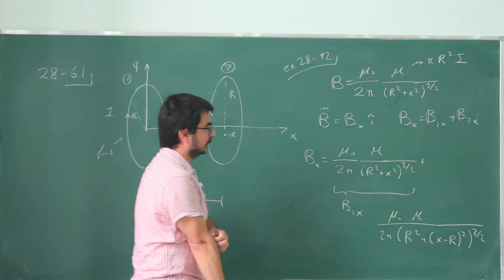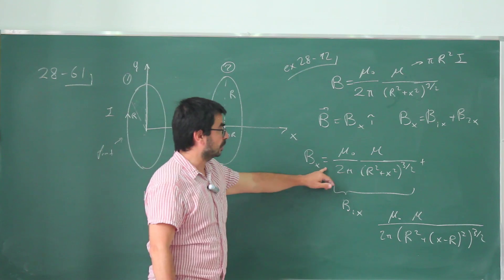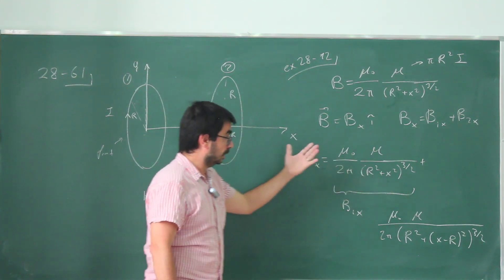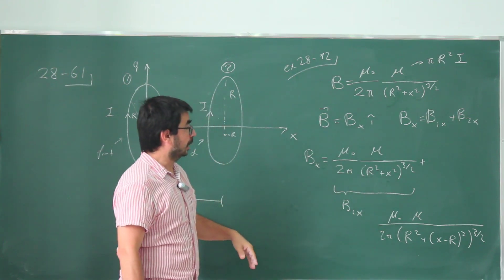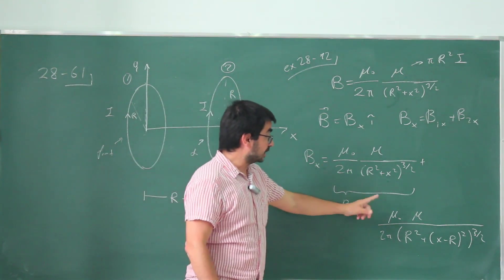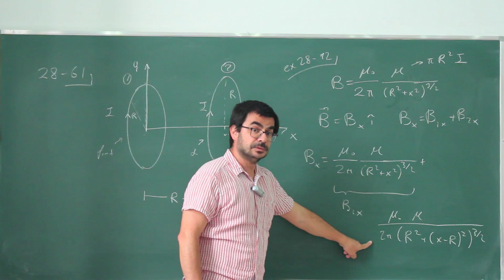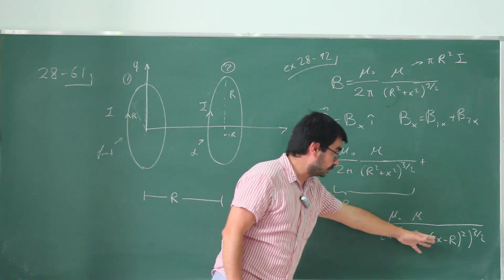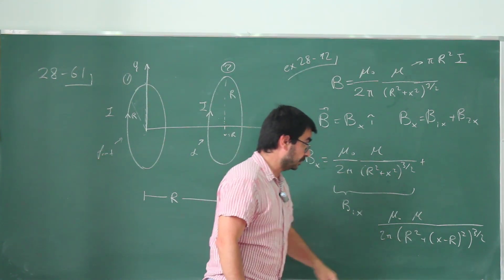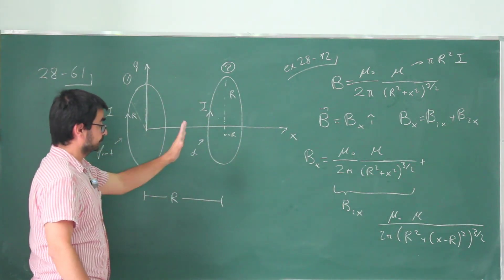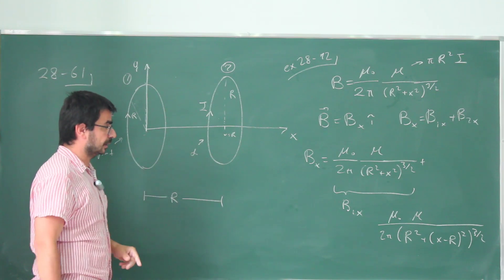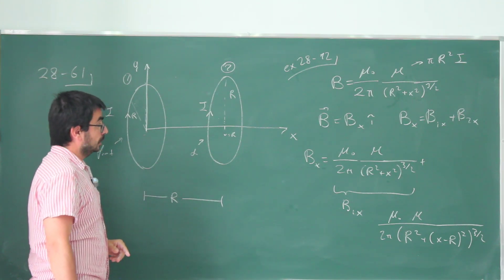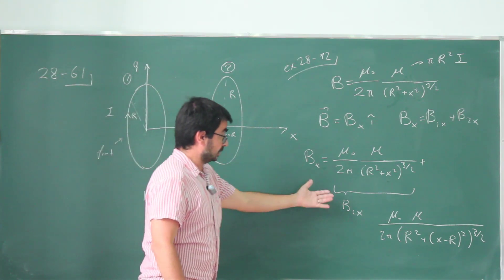So if you look at their center, the center of this one corresponds to x equals 0, and it makes sense that you get mu naught mu over 2 pi R to the third power. And the center of that one corresponds to x equals capital R. And again, if you substitute x equals R, you get the same expression. So this is the correct shifting. To shift the origin for this one, you need to subtract off a capital R.